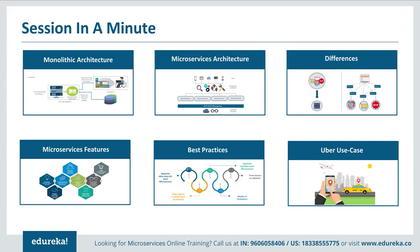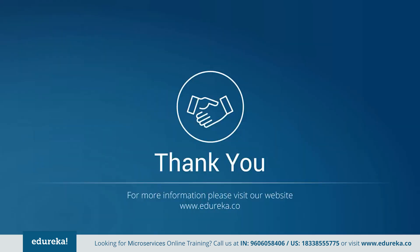To summarize: we started with understanding monolithic architecture and its challenges. Then we went through the microservice architecture and understood the differences between both. After understanding the architectures, we focused on the features of microservices and discussed the best practices to design them. Then we compared Uber's previous framework to the present one and understood what made them change their architecture. Thank you for watching this video and have a great day!